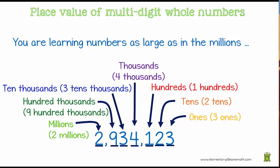Each of these digits are worth a different amount. Even though we just see them singly, they are actually worth a different amount. The 2 is actually 20. The 1 is actually 100. The 4 is 4,000. The 3 is 30,000. The 9 is 900,000. And the 2 is worth 2 million.